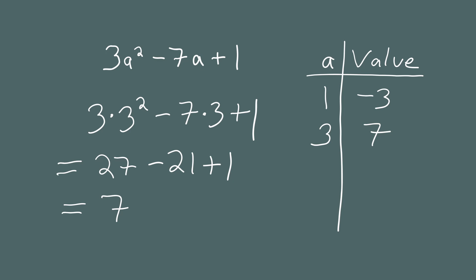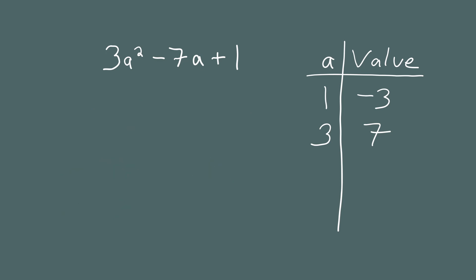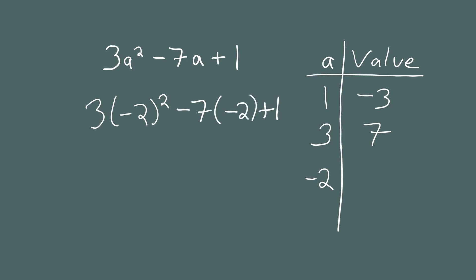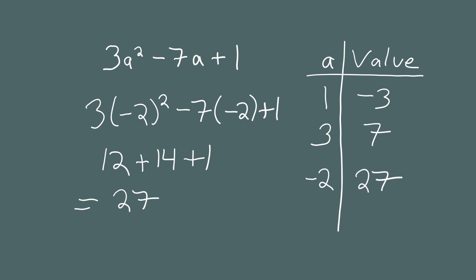Let's do one last example with this algebraic expression. We're now going to plug in negative 2 for a. That gives us 3 times negative 2 squared minus 7 times negative 2 plus 1. Now 3 times negative 2 squared is 12, and negative 7 times negative 2 is positive 14, plus 1. Add these together and you get 27. So when a is negative 2 the value of the expression is 27.